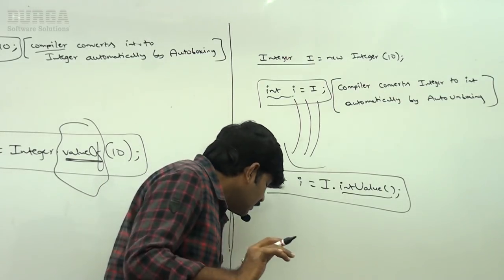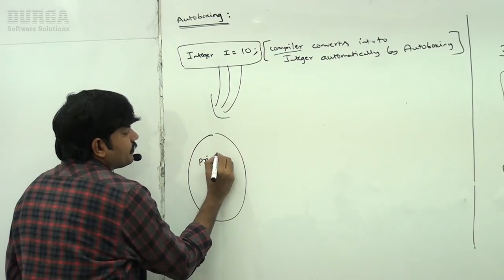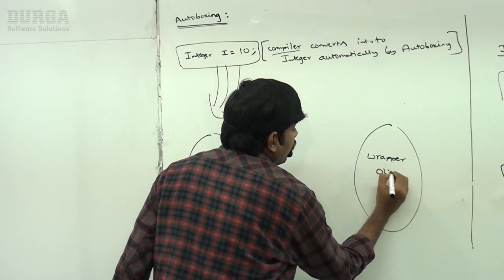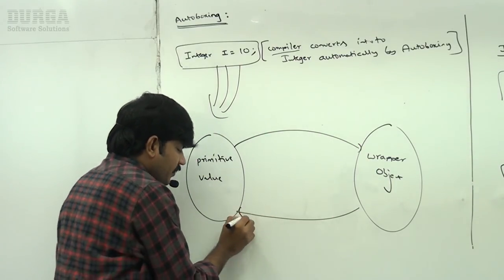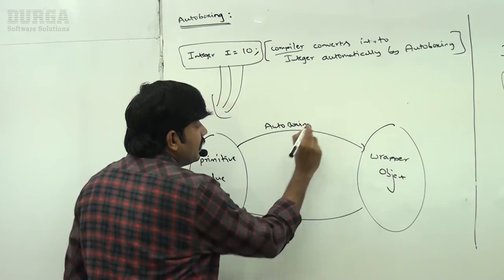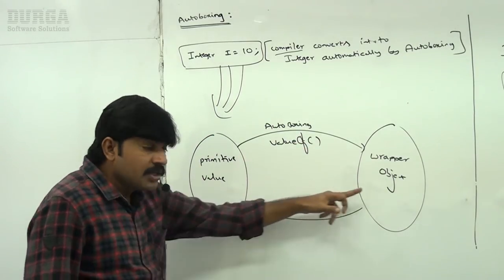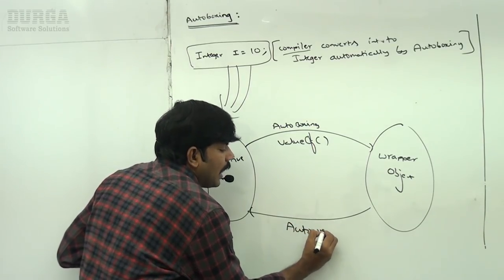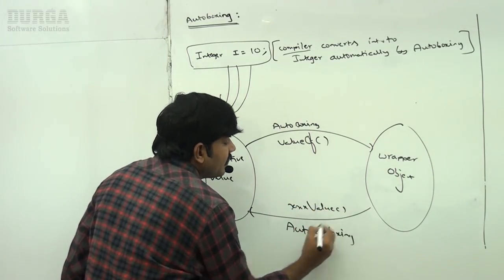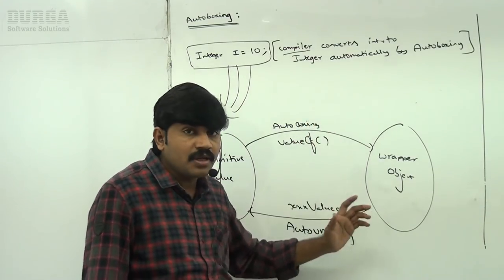To summarize the terminology: primitive value to wrapper object conversion — automatic by compiler — is called auto boxing, implemented internally using the `valueOf()` method. Wrapper object to primitive conversion — automatic by compiler — is called auto unboxing, implemented internally using `xxxValue()` methods. This is the basic terminology everyone should be aware of about auto boxing and auto unboxing.